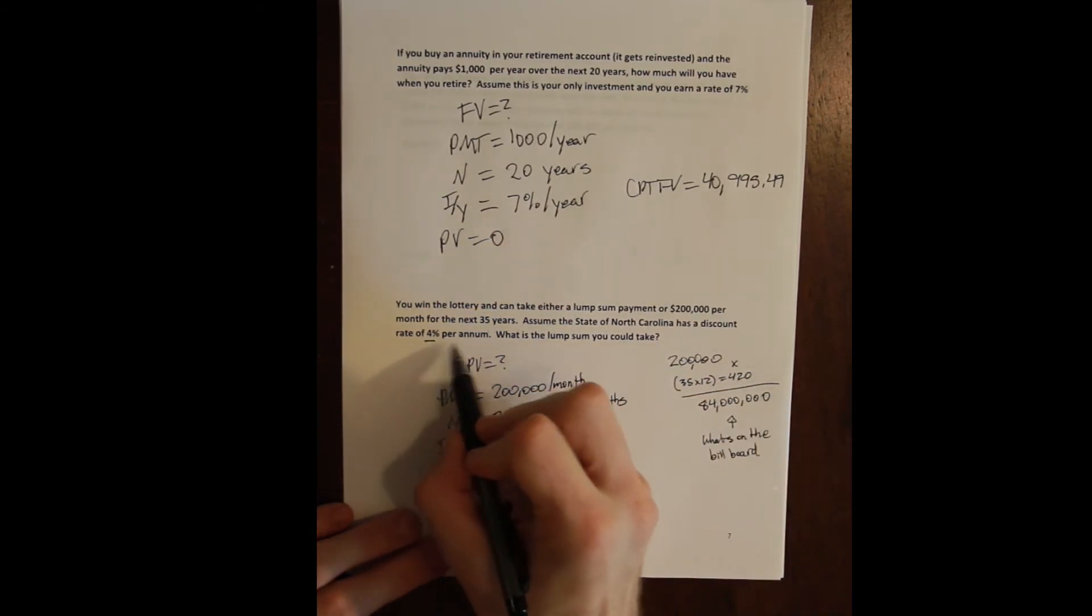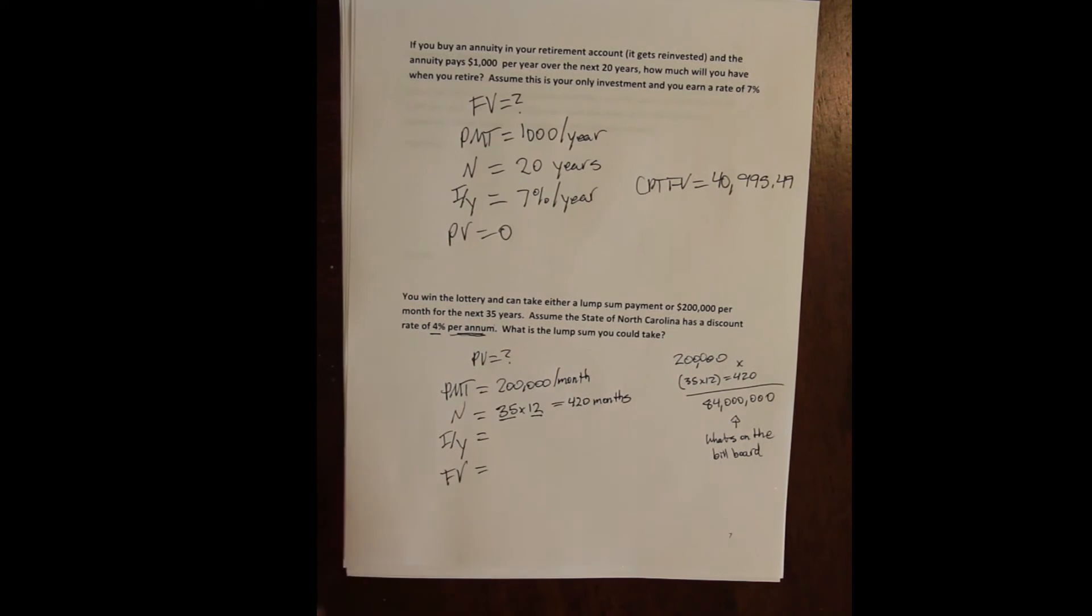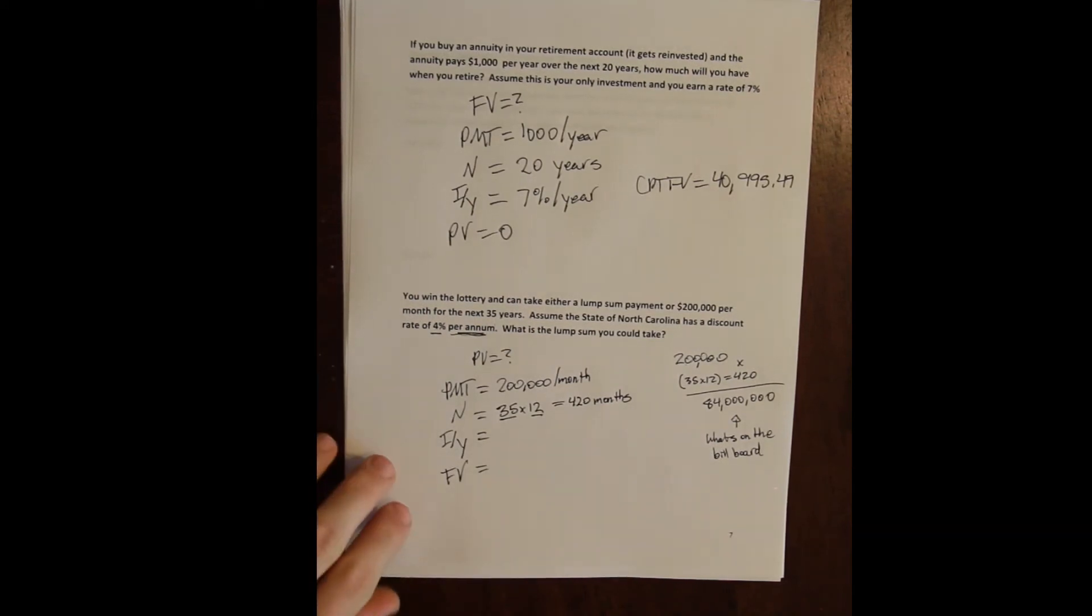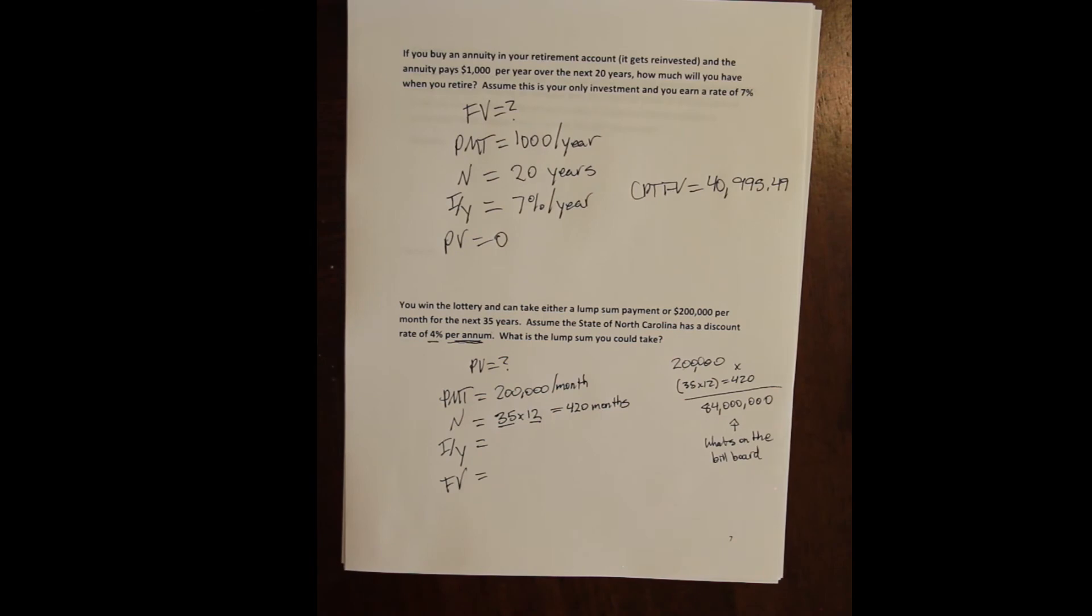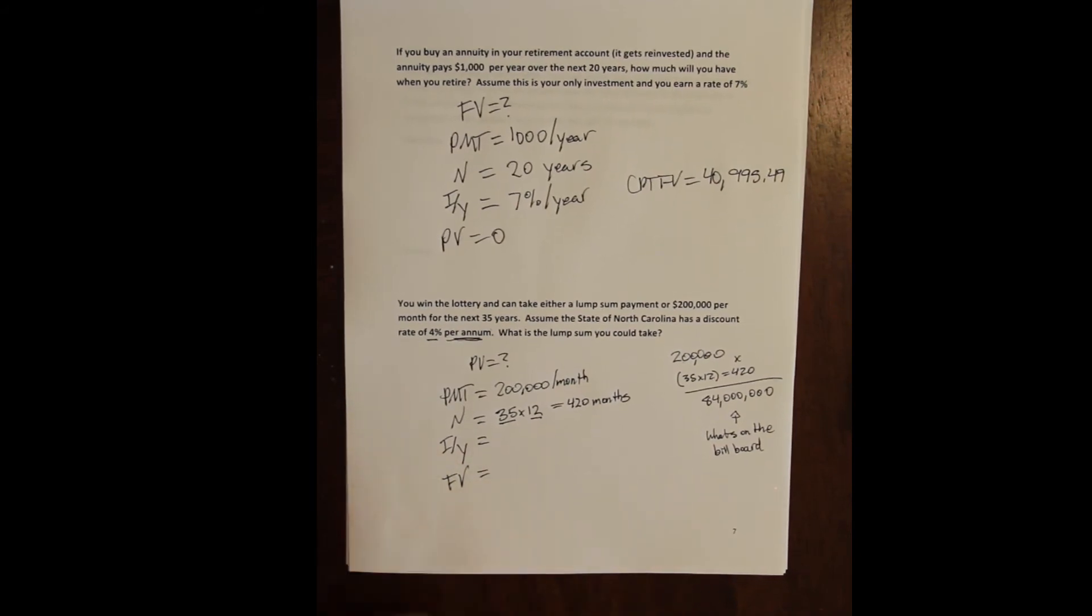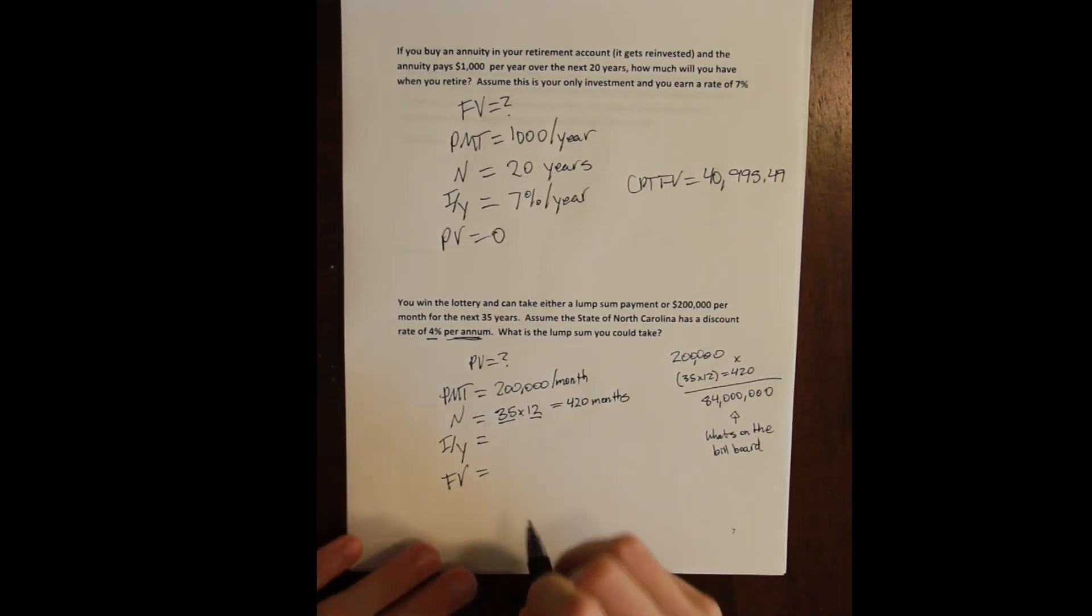The rate is 4% per annum. Again, annum is just Latin for per year, annum and annual. So this is 4% per year. Again, this kind of Latin terminology is very common in contracts, so it's something you need to be aware of. You've seen it in your homework already.